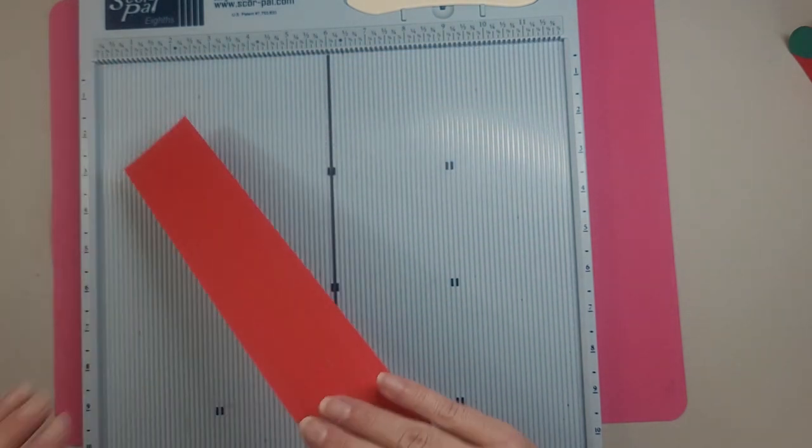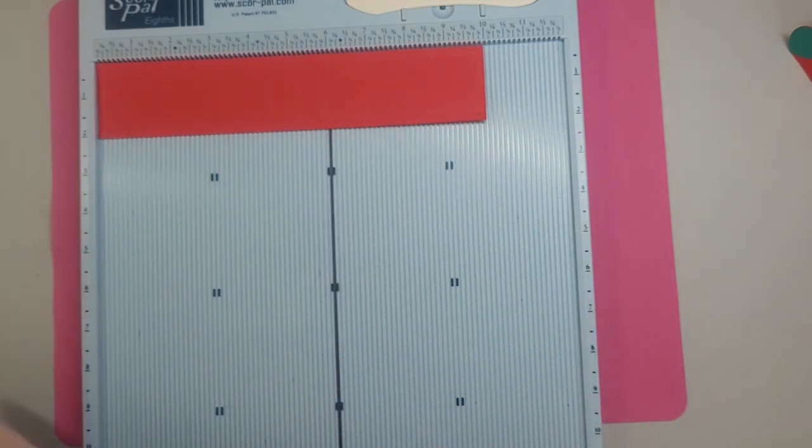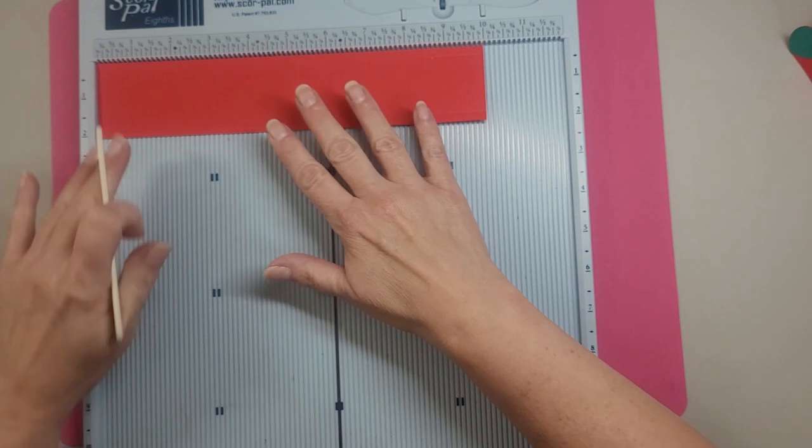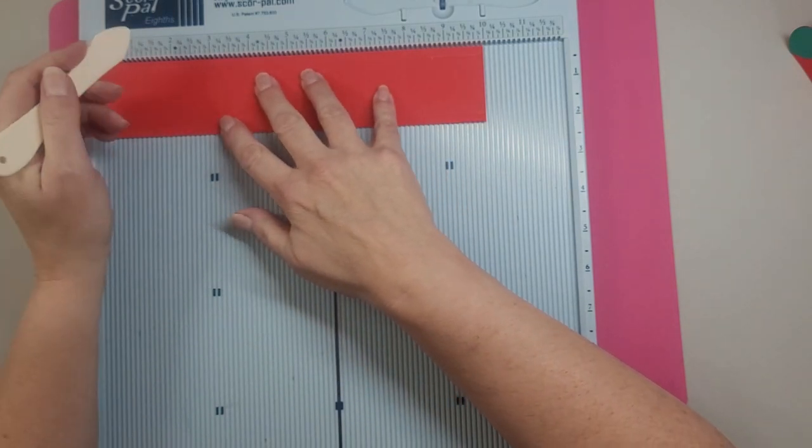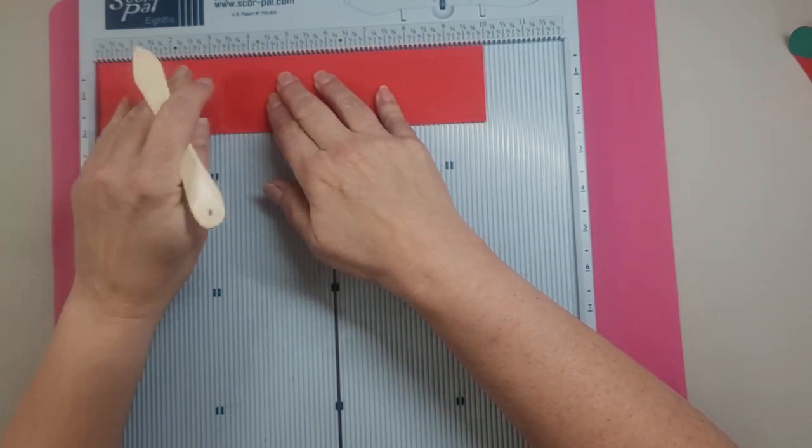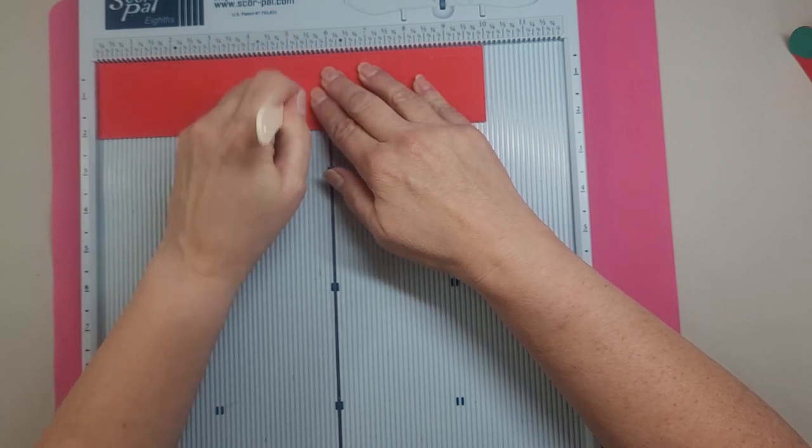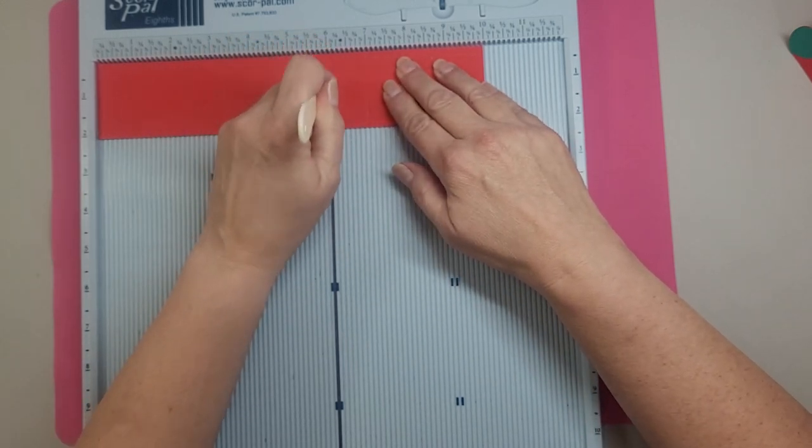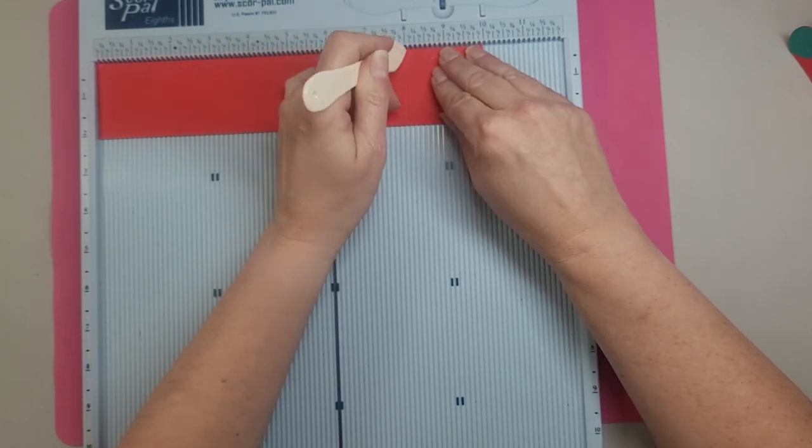So here is our paper that is 10 inches long. We are going to score this at three and a quarter, five and a quarter, at six, seven, and eight.